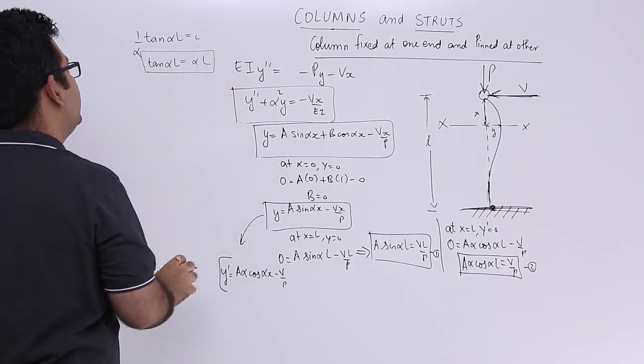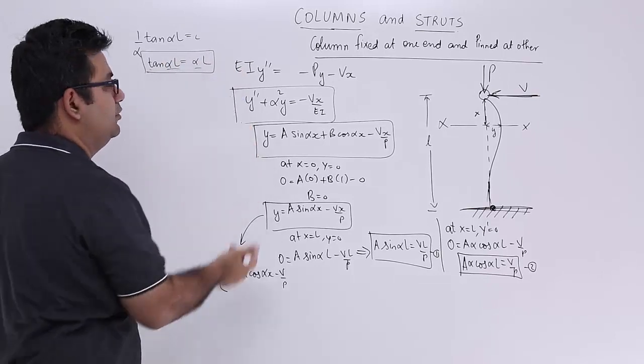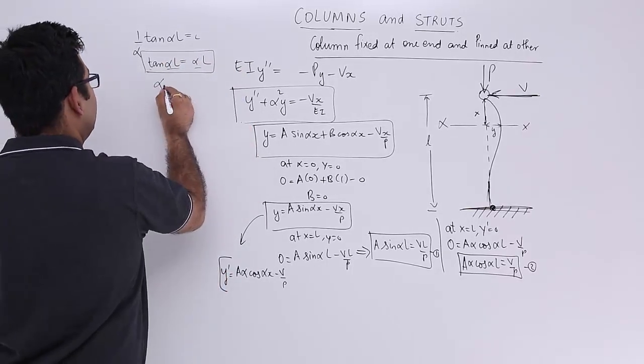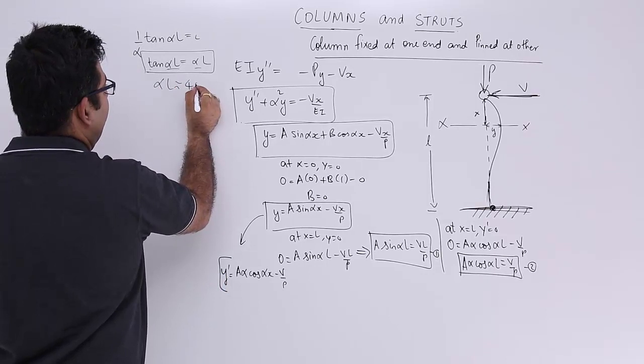So for this kind of a condition that is tan of theta is equal to theta, the value of theta is approximately 4 and a half radians.